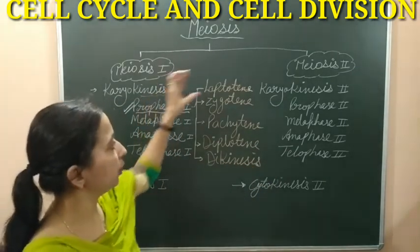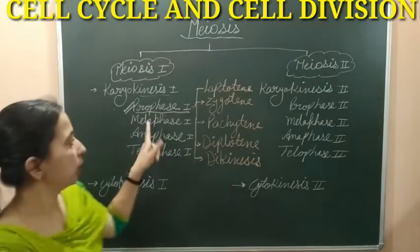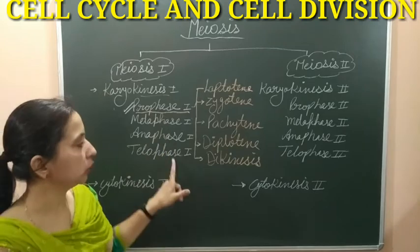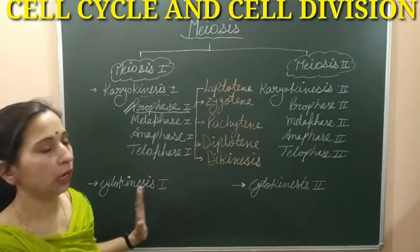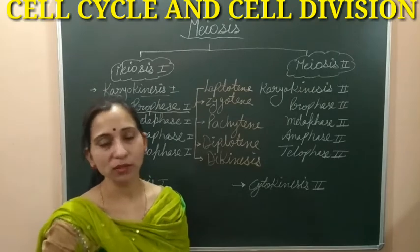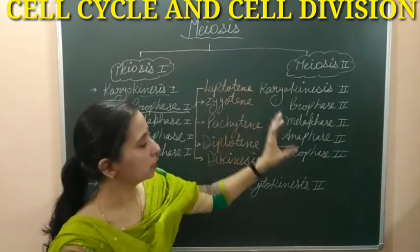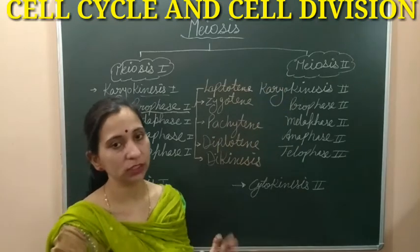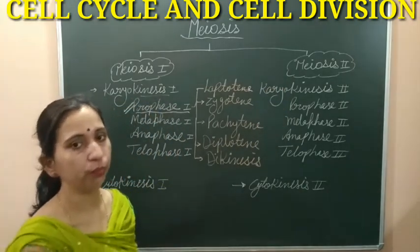After prophase 1, metaphase 1 happens, then anaphase 1, then telophase 1, and then karyokinesis 1 is complete. After that the cell will divide and it moves into the meiosis 2, where it does karyokinesis 2 and then cytokinesis 2. So these are the sub-phases and stages of meiosis.